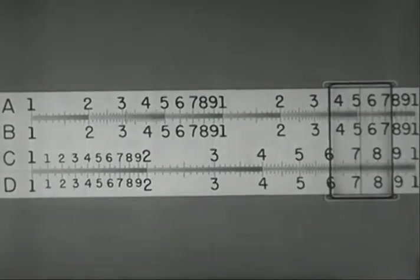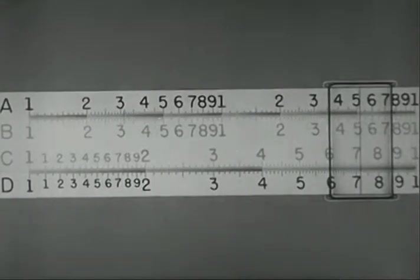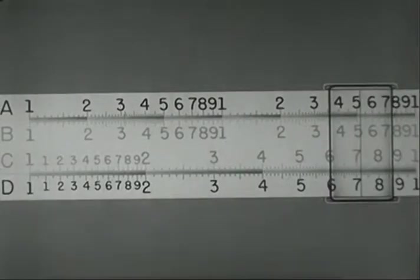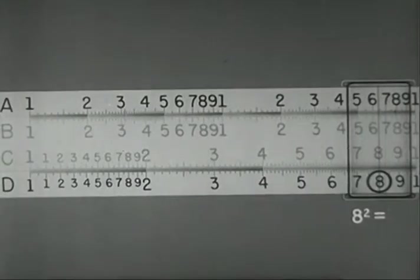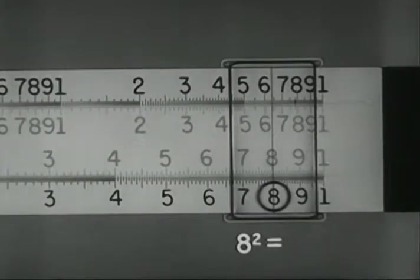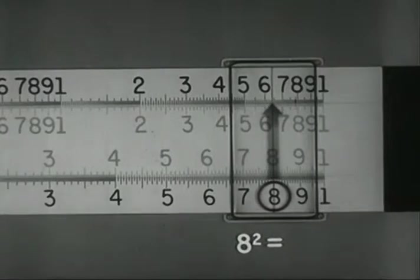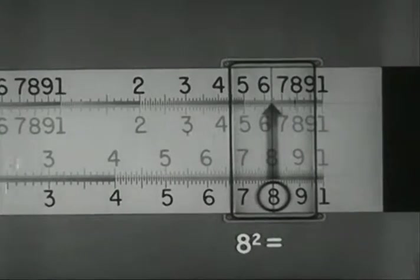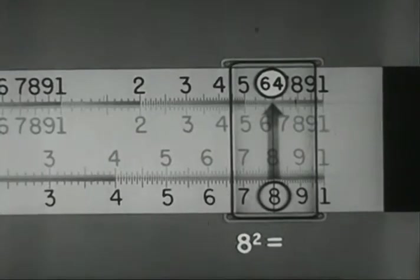In obtaining squares and square roots, use the B and C scales, or the A and D scales. To square a number, 8 for instance, place the hairline on 8 on D. Follow the hairline up to the A and D scales. And under the hairline, read the square, 64 on A.